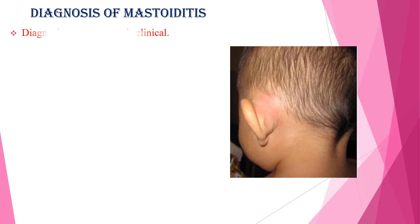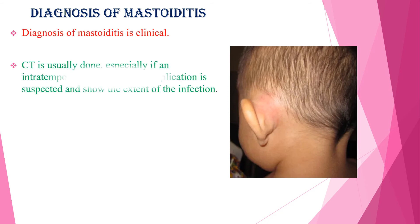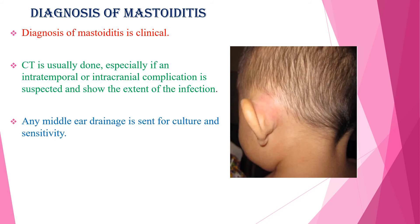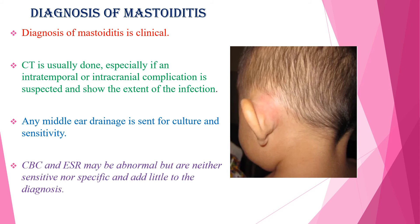Diagnosis of mastoiditis is mainly clinical. CT is usually done, especially if an intratemporal or intracranial complication is suspected, and if we also want to know the extent of the infection. Any middle ear discharge is sent for culture and sensitivity, and other investigations like CBC and ESR are abnormal, but they are neither sensitive nor specific and are helpful to the diagnosis.